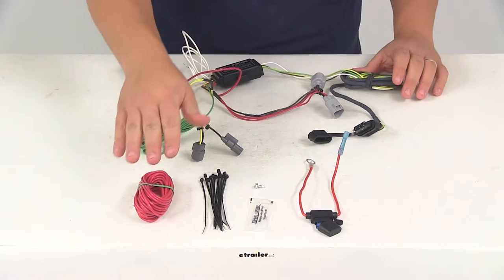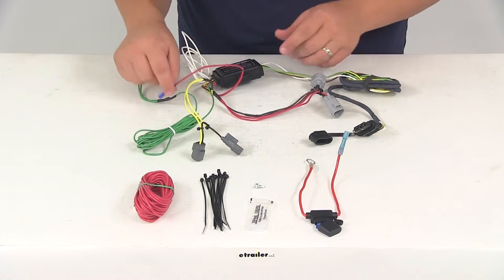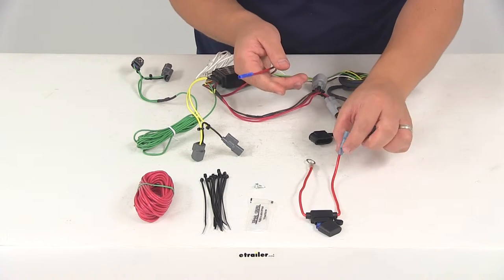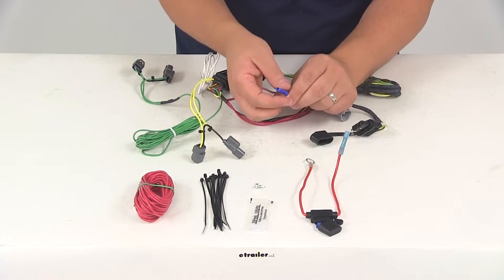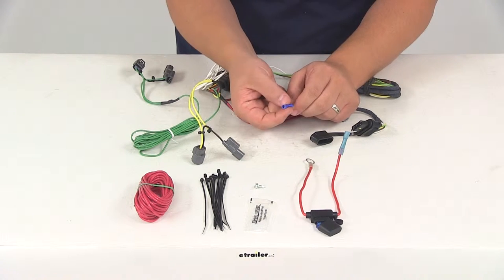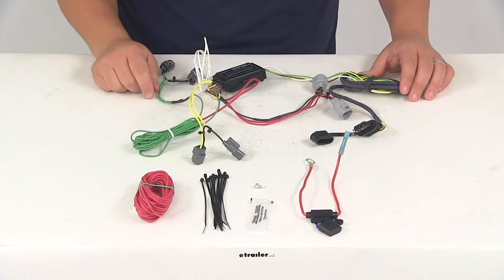And it's going to include zip ties, wiring, and all the necessary connectors. Now one of the things I really like about this system is all the connectors are already pre-attached to one half of the wiring. So we don't have to worry about attaching them. All we have to do is insert the wires on the other end and crimp it down one time. So it's a really nice system.